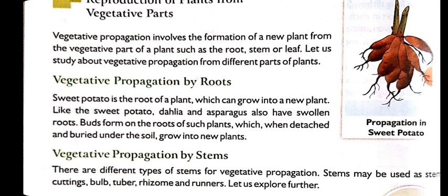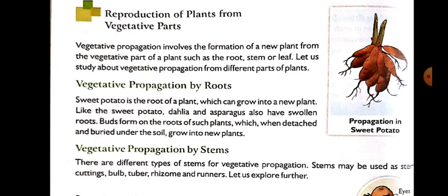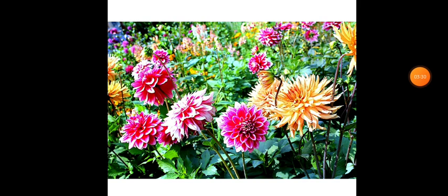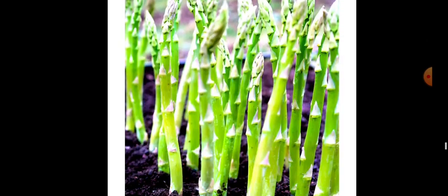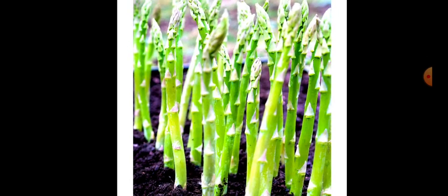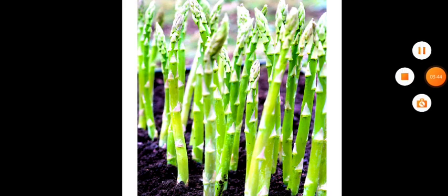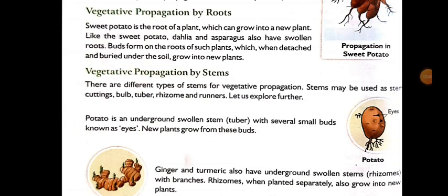Along with sweet potatoes, some plants like dahlia can also be grown from a root into a new plant. There is also asparagus, which can be grown into a new plant by the roots. These are swollen roots which grow into new plants. The buds on these roots grow into a new plant, and after that the new plant detaches itself from the parent plant and grows as an individual plant.